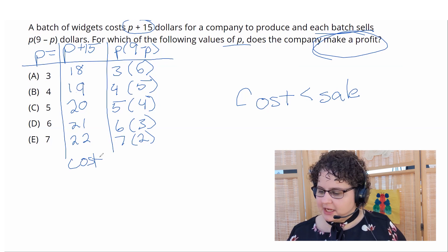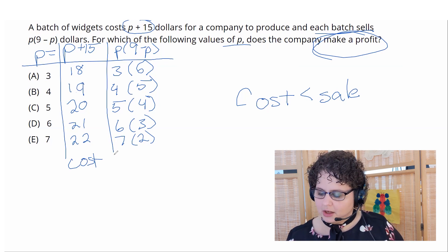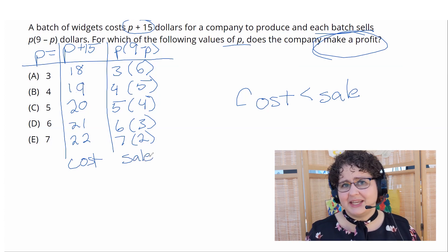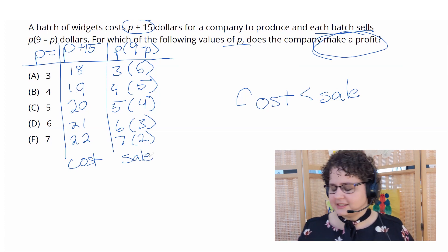P times 9 minus p, that is our column of sale prices. Okay, so that's what it's selling for. All I have to do is see at what point is the cost less than the sale price.